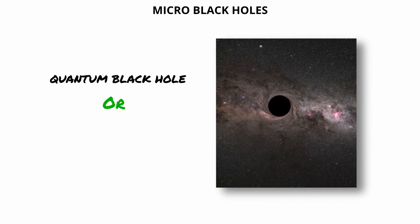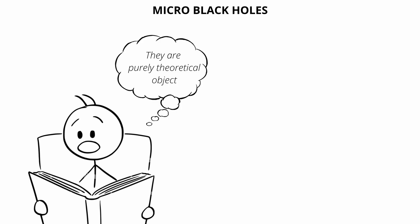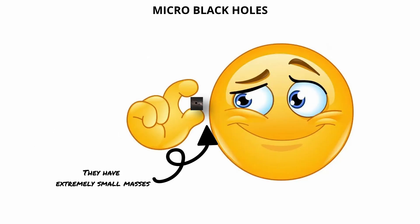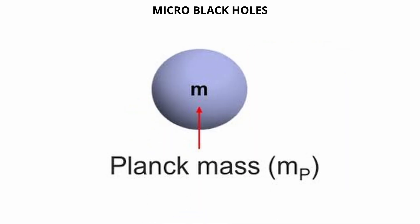Micro-black holes. Micro-black holes, also known as quantum black holes or mini-black holes, are purely theoretical objects predicted by certain models of quantum gravity and high-energy physics. These black holes would have extremely small masses, possibly as low as the Planck mass.